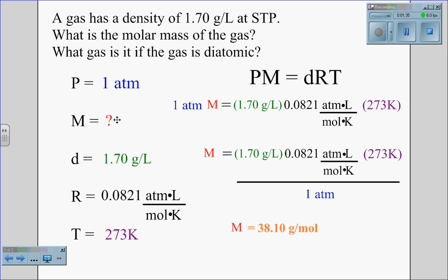We need to find the molar mass of the gas. Our density is given to us as 1.7 grams per liter. Our R value is our constant 0.0821 atmospheres times liters divided by moles Kelvin, and our temperature is 273 Kelvin, which is standard temperature.